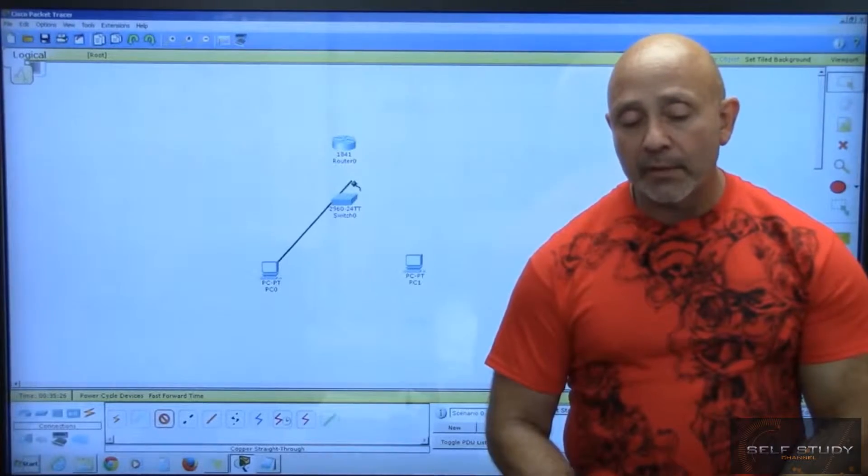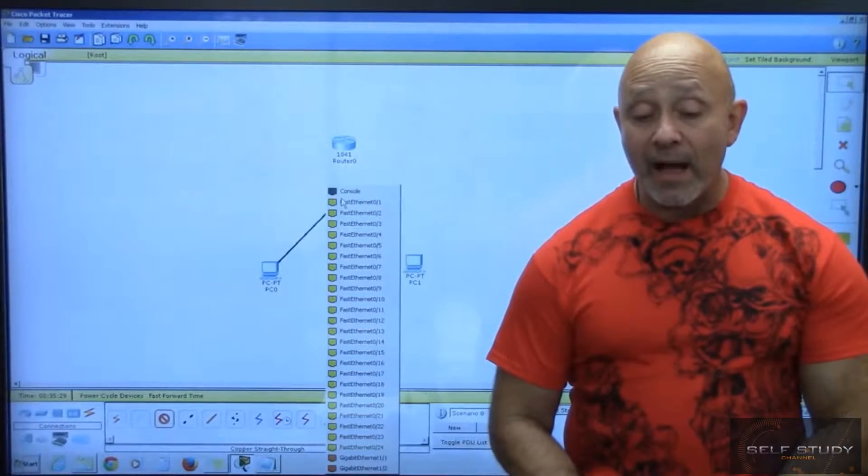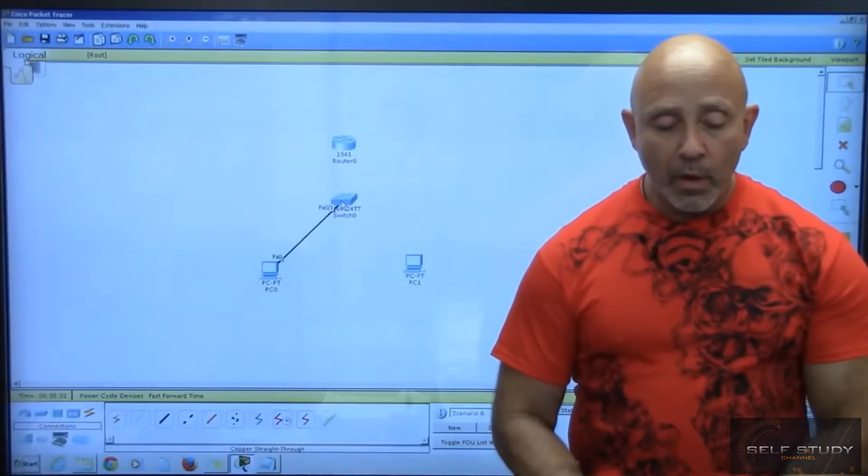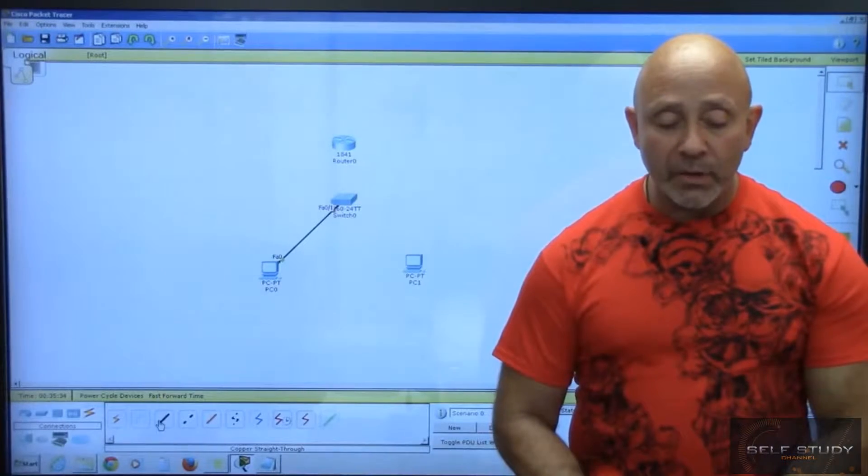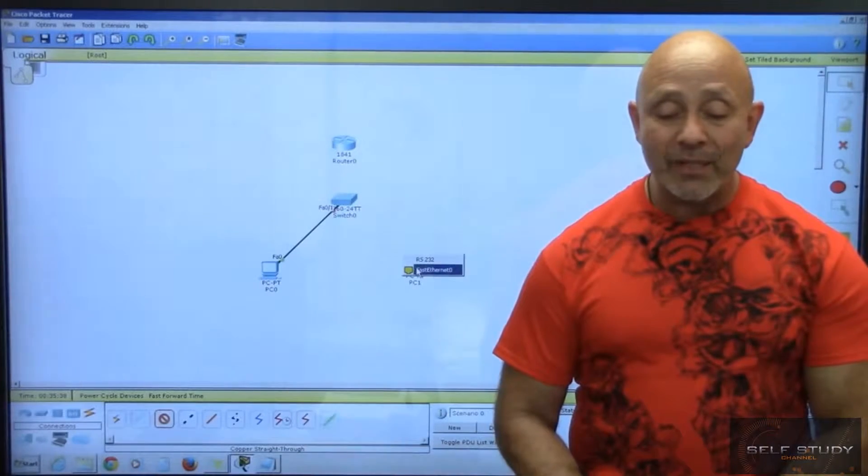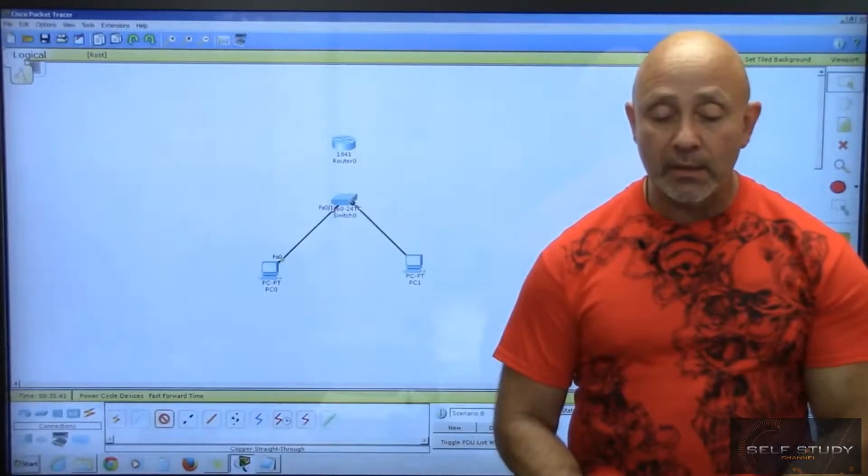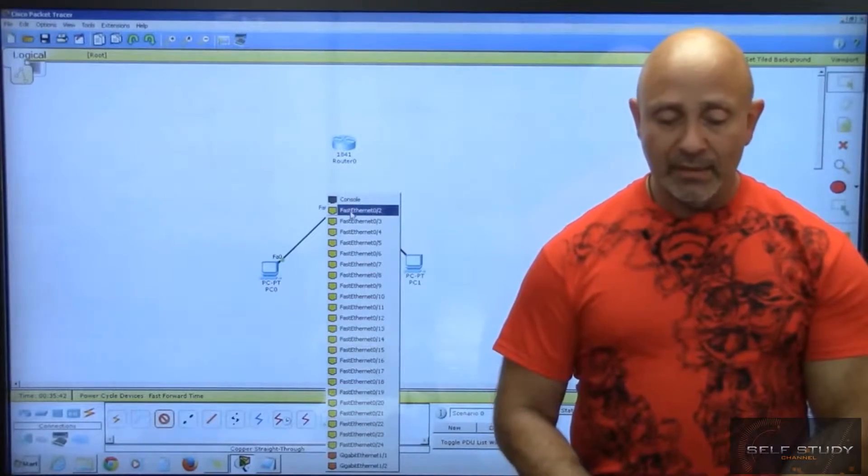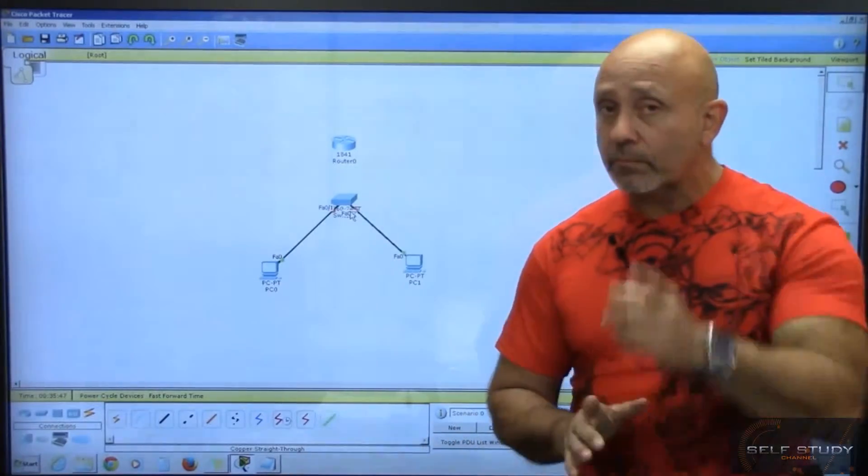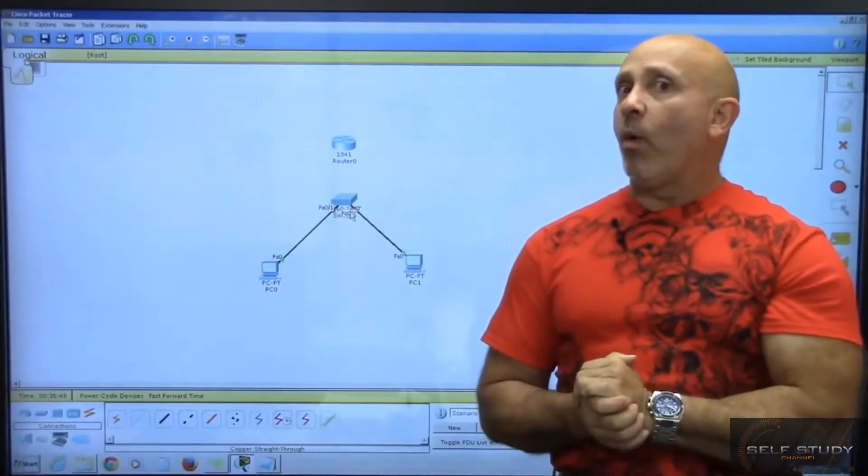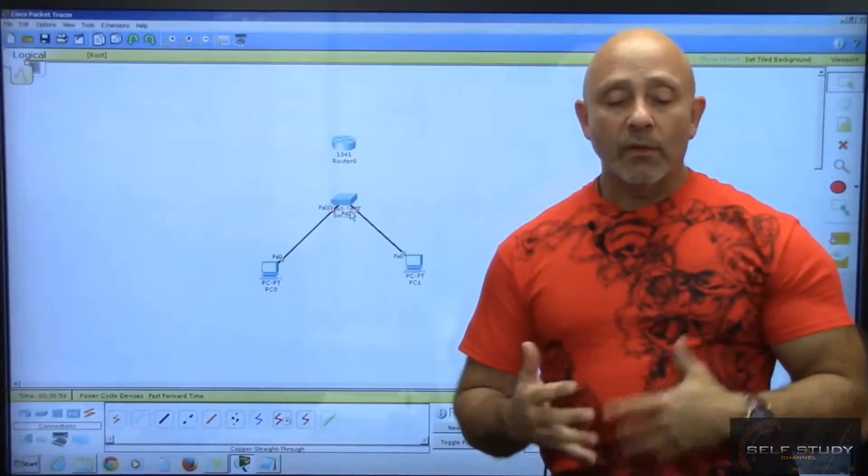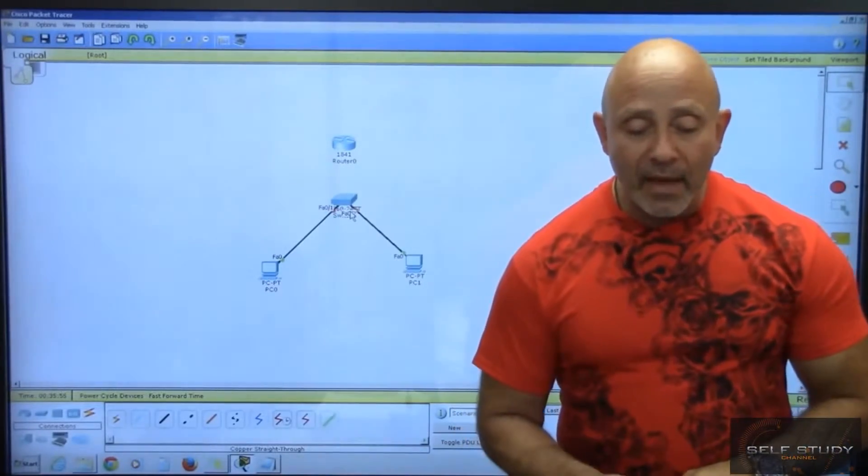Now remember that when we talk about copper straight-through, we're going to F01. We're talking about Category 5 twisted pair cabling or Category 6 twisted pair cabling. When we get to the section in the course that deals with cabling, we'll talk about those cables. Obviously, we want Cat 6. Why? Because you get that 1000 megabits per second versus 100 megabits per second.